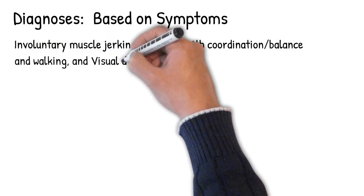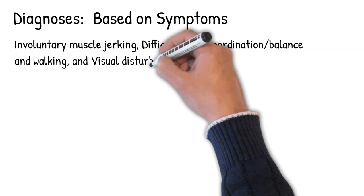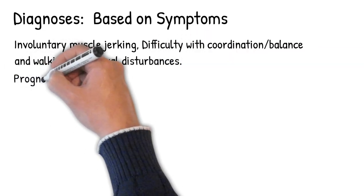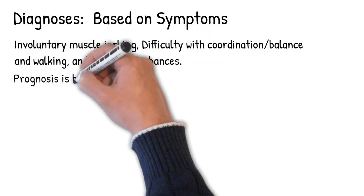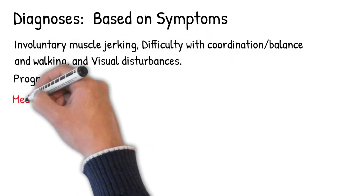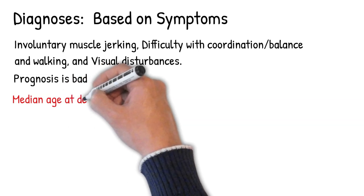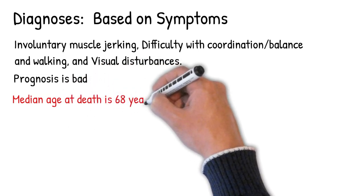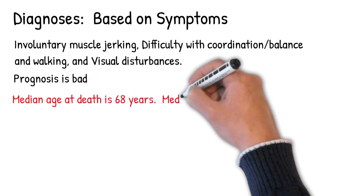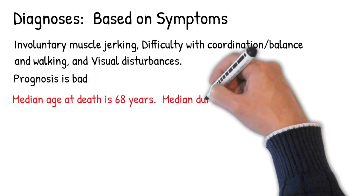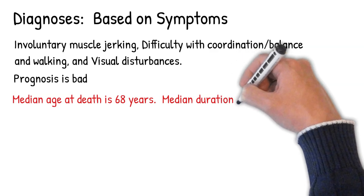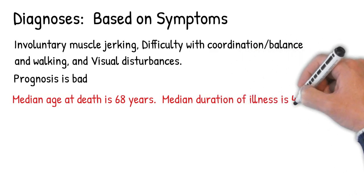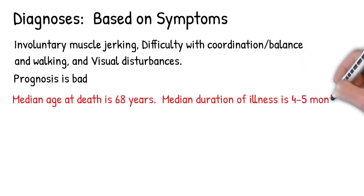Prognosis is bad. There is no patient with Creutzfeldt-Jakob disease who lived more than 2.5 years. Median age at death is 68 years, and median duration of illness is 4 to 5 months. There is no cure or effective treatment for CJD — only palliative care.